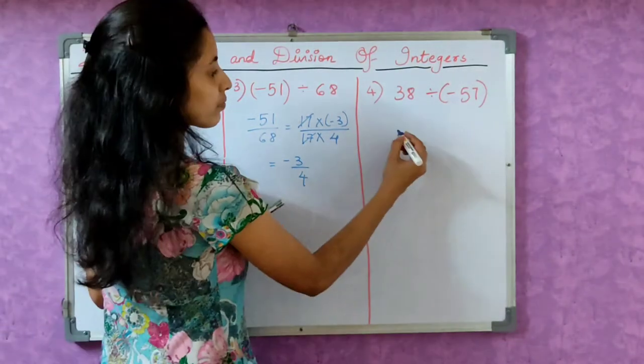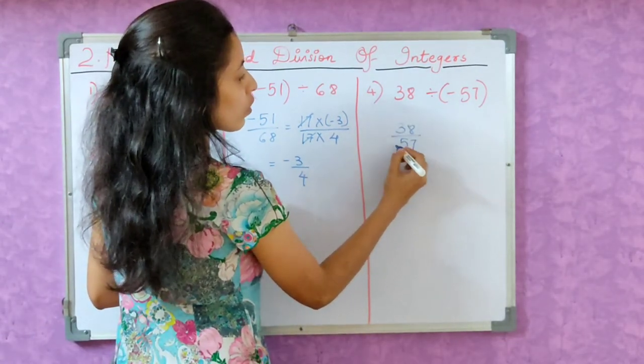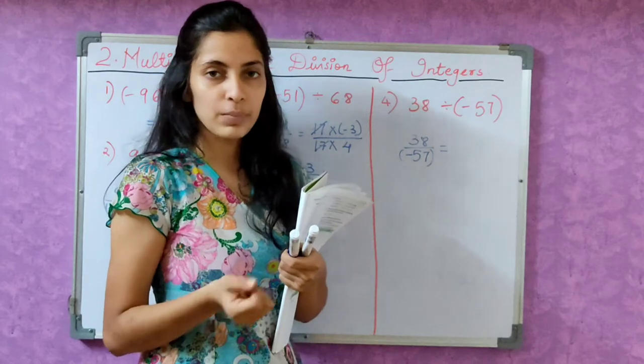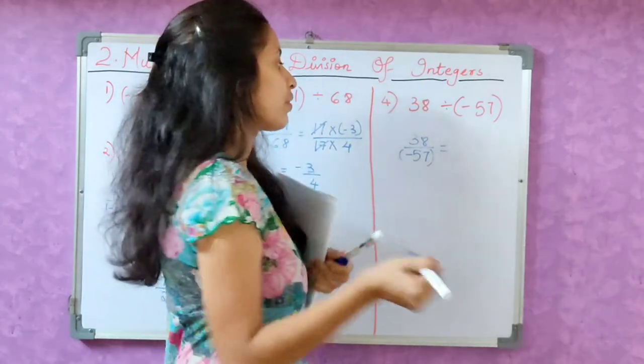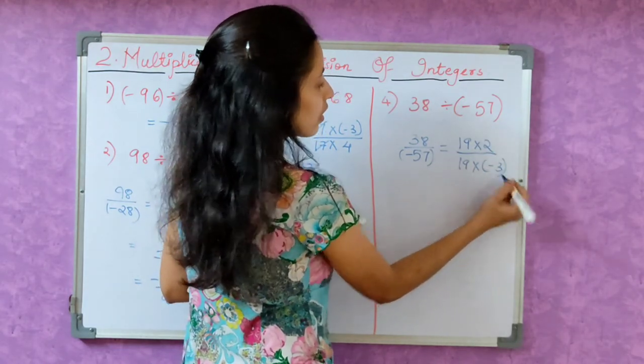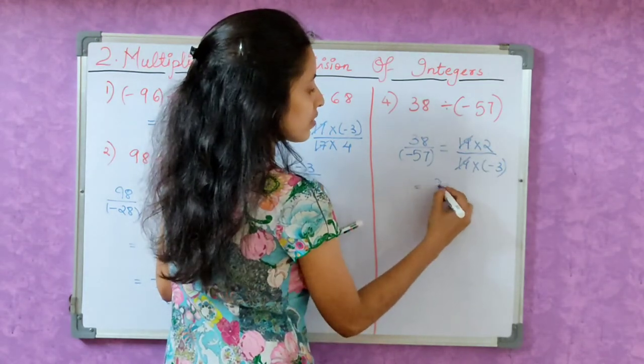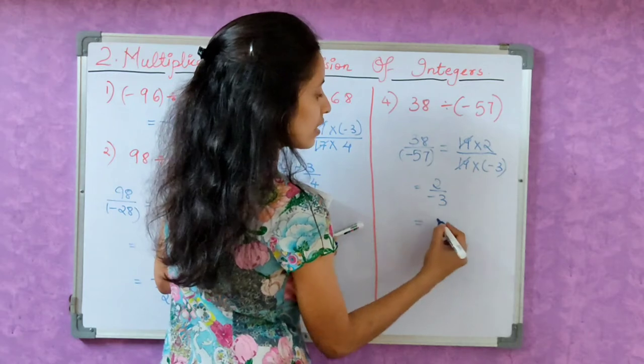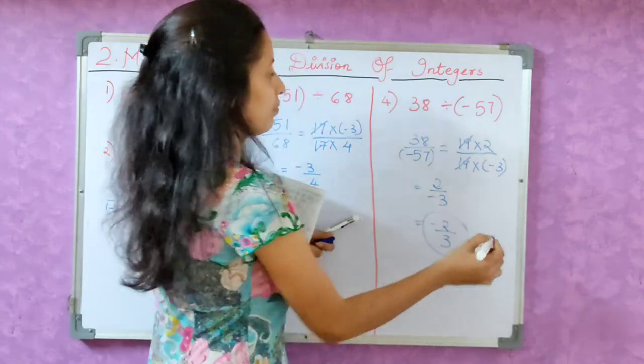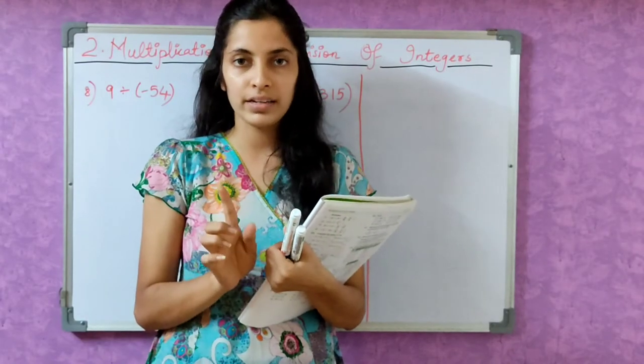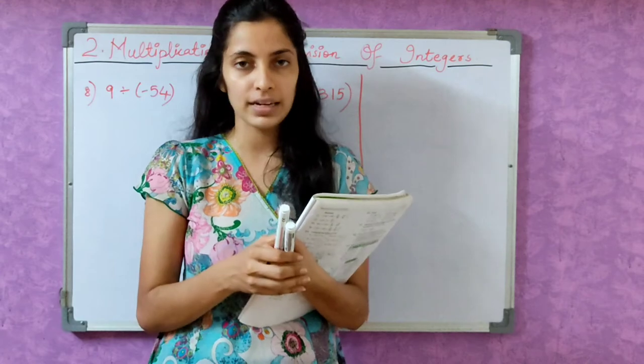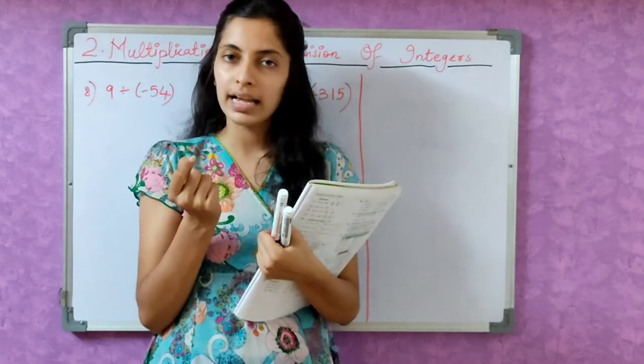And now let's see the fourth one. 38 divide by minus 57. Which table do these come in? They come in the 19 table. We need to remember the 19 table. So 19 twos is 38, and 19 into minus 3 is 57. 19 and 19 cancel. Our remaining answer is 2 by minus 3. As always, the negative sign will not be in the denominator. So minus 2 by 3 is our answer. Now 4 sums are done. Did you understand? Now you have to do the 5th, 6th, 7th, and 9th sums yourself. And you have to tell me in the comments what your answer is. The 8th and 10th are a bit different, so I'm solving them for you.